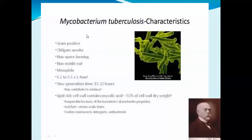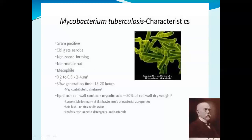The characteristics of Mycobacterium tuberculosis, the causative agent of TB: it is Gram-positive, obligate aerobic, non-spore forming — meaning it does not produce endospores — and non-motile, meaning it cannot move from one location to another. It is also mesophilic, and its size is 0.2 to 0.6 by 2 to 4 micrometers.